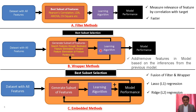Then the machine learning algorithm is applied. Based on the inference from the learning algorithm, a different set of feature subsets is generated. This process continues with different subsets of features, and finally we select the features that have better performance. We add or remove features in the model based on the inferences from the previous model.